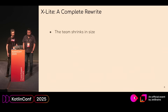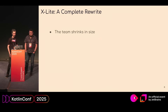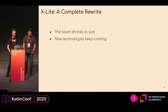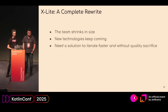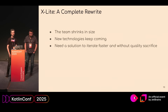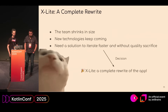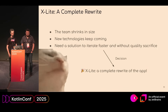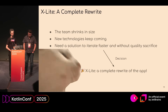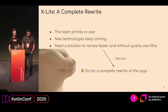As it sometimes happens, the team shrinks in size but new technologies keep coming — like Jetpack Compose, Kotlin Multiplatform, new versions of Kotlin, etc. The team needed a solution to iterate faster without sacrificing quality. So there was a decision to completely rewrite the main app, and we called it X-light.